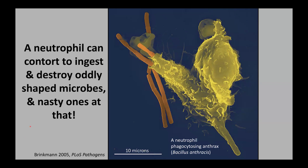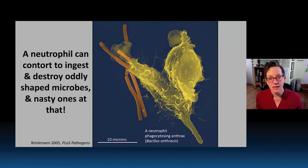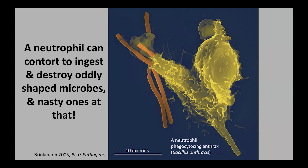Neutrophils' ability to phagocytose pathogens is incredible — they can contort to ingest really oddly shaped microbes, such as these rod-shaped anthrax bacteria shown here. This is a colorized scanning electron micrograph with the neutrophil in yellow and the anthrax microbes in orange. Anthrax is a pretty virulent infection, and here we have this heroic neutrophil phagocytosing even these long, awkward-shaped anthrax bacteria — you can see one distending the membrane of the neutrophil as it continues to ingest them.